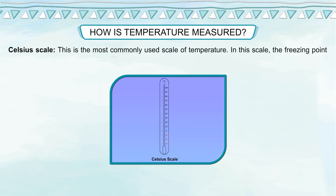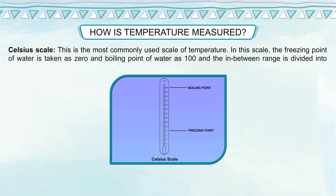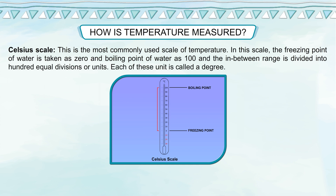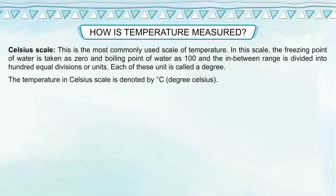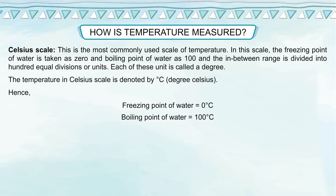Celsius scale: This is the most commonly used scale of temperature. In this scale, the freezing point of water is taken as 0 and the boiling point of water as 100, and the in-between range is divided into 100 equal divisions or units. Each of these units is called a degree. The temperature in Celsius scale is denoted by degree C (degree Celsius). Hence, freezing point of water equals 0°C and boiling point of water equals 100°C.